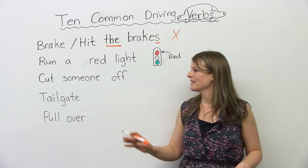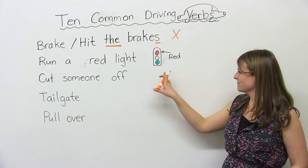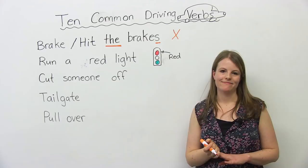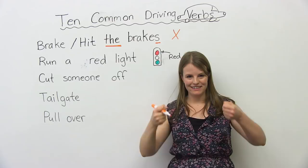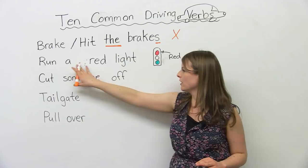Our second common verb is a very bad thing to do: run a red light. When you're driving, you might come to a traffic light with green, yellow, and red. Green means go, red means stop. So if you don't hit the brakes when you see the red and you keep driving, it means you ran a red light. This is a very bad thing to do.